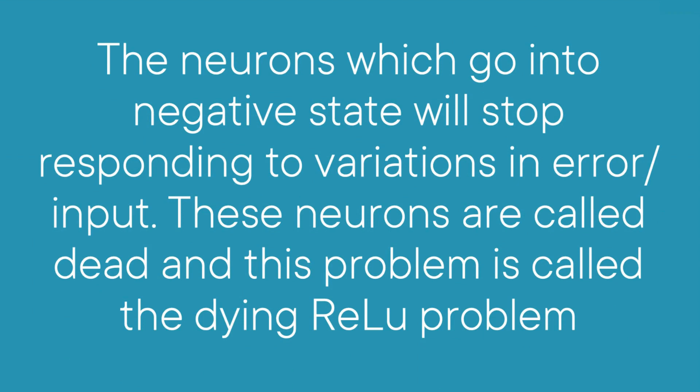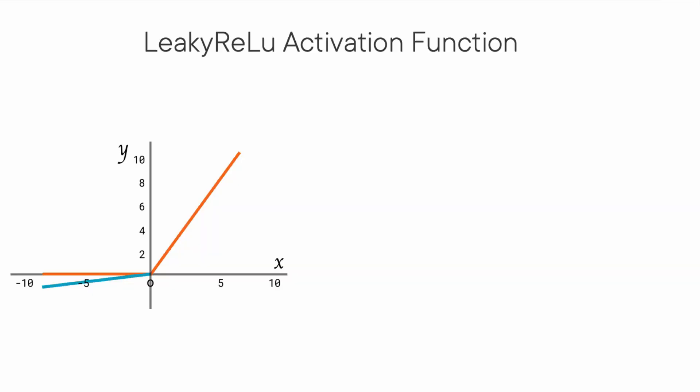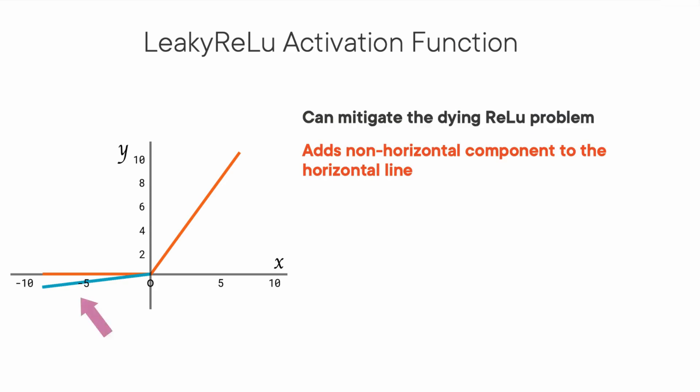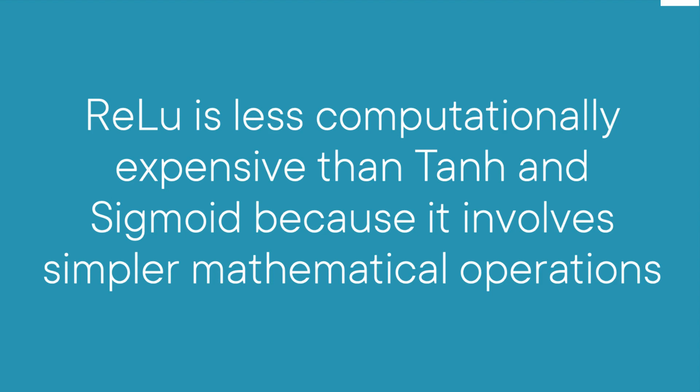We call these dead neurons, and this problem is called the dying ReLU problem. This problem can cause several neurons to just die and not respond, making a significant part of the network passive. There are variations like Leaky ReLU to mitigate this issue by simply making the horizontal line into a non-horizontal component. ReLU is less computationally expensive than tanh and sigmoid because it involves simpler mathematical operations.